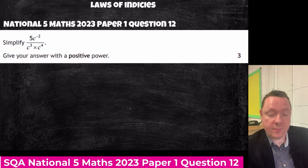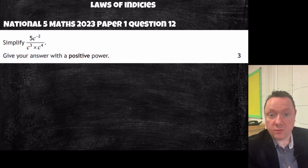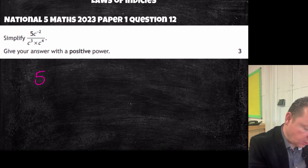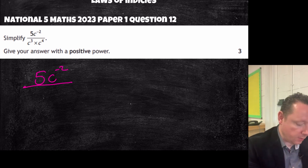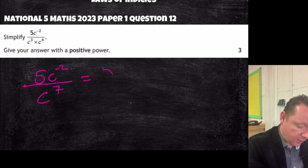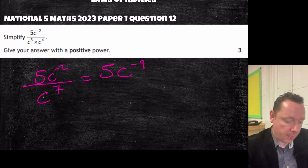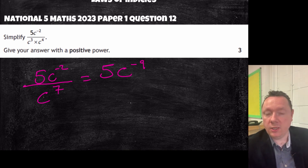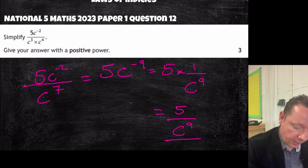National 5 Maths 2023, paper 1, question 12: simplify 5c to the power of negative 2, all over c cubed times c to the 4. Give your answer with a positive power. On the bottom, add the powers: 3 plus 4 is 7, so c to the 7. Now divide: the 5 just comes along for the ride, and we do minus 2 take away 7, which is negative 9, giving 5c to the negative 9. Using the negative index rule: that's 5 times 1 over c to the 9, which simplifies to 5 over c to the 9.